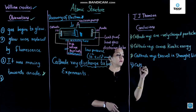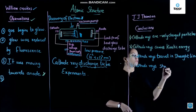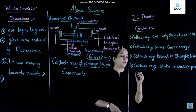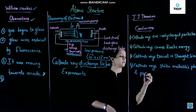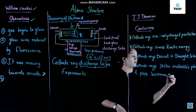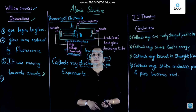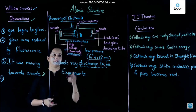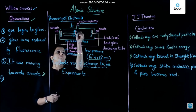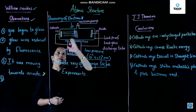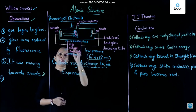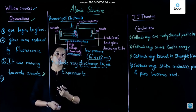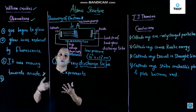Furthermore, cathode rays strike the metallic plate and the plate becomes red. If we place a metallic plate — let us say a thin copper sheet — in the passage of the cathode rays, it was found that the sheet becomes red hot; its temperature increases. This means that cathode rays carry sufficient energy to increase the temperature of the object on which they fall.